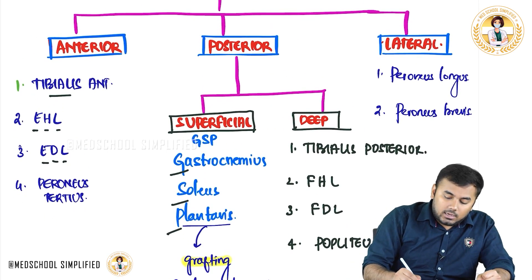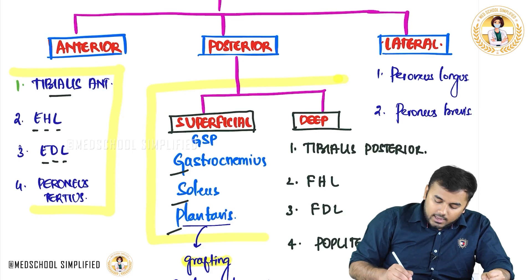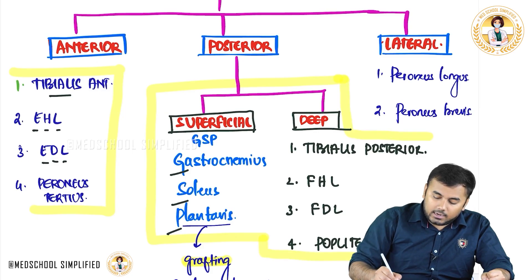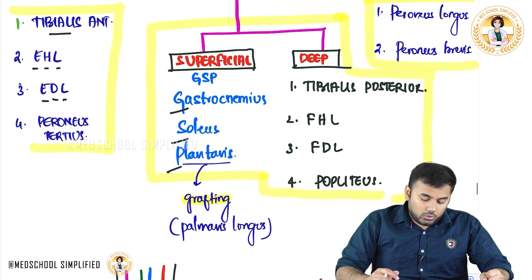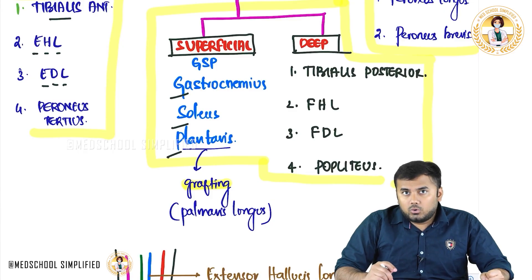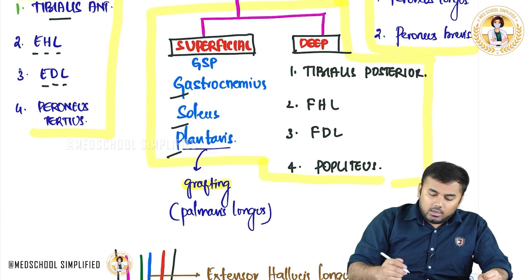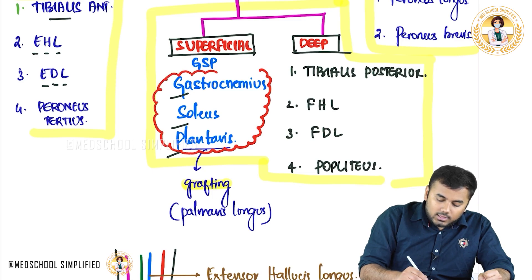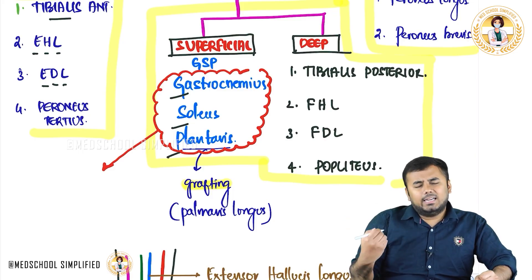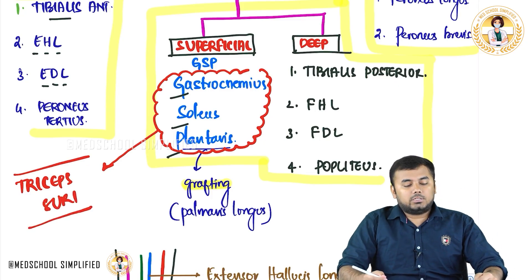These muscles — in the anterior, lateral, and posterior compartments — are very important. One final key term: gastrocnemius, soleus, and plantaris together share a common tendon attached to the calcaneus, and together they are called triceps surae. These three muscles form the triceps surae group.